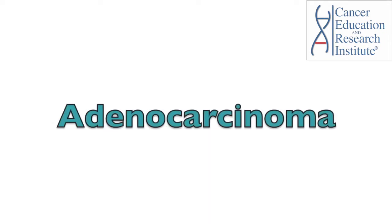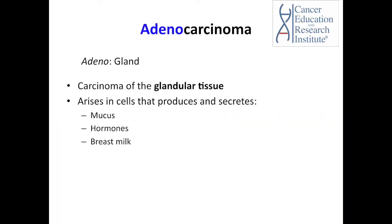Now let's talk about adenocarcinomas — what they are and what types exist. Adeno means gland, and adenocarcinoma refers to a carcinoma of glandular tissue. This carcinoma type arises in cells that produce and secrete mucus and other fluids such as hormones and breast milk.